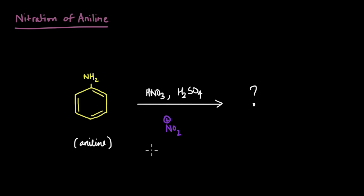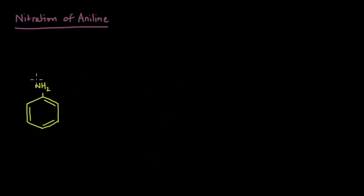Let's look at aniline a little more closely. We know something about this nitrogen — it has a lone pair of electrons. What it's going to do is share these electrons with the ring, because of which it is going to activate the ring. There are also double bonds, so there's going to be resonance. Let's quickly draw the resonance structures and see where the electron density increases.